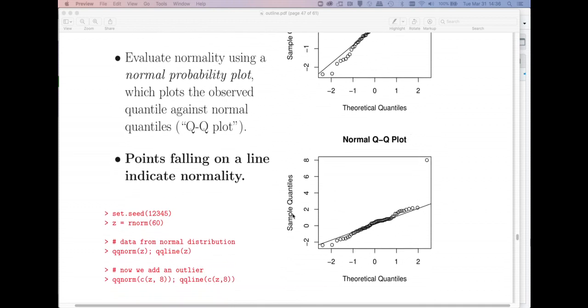In this next plot, I've given you the code down here, I've decided to add an outlier. So I added the value 8, and that value 8, 8 standard deviations out from the mean, is shown up here.